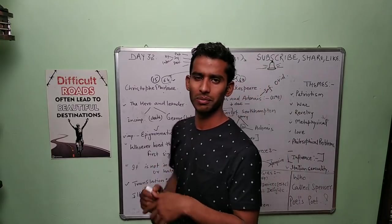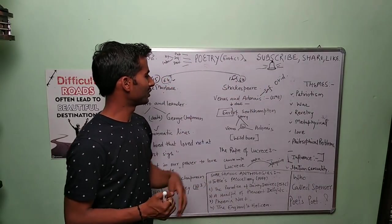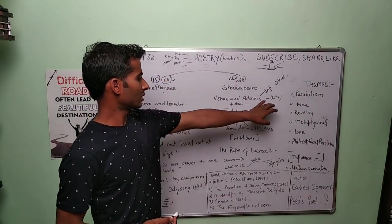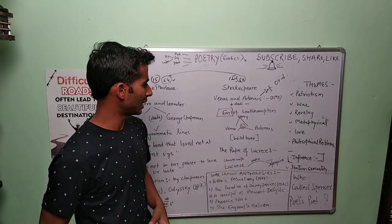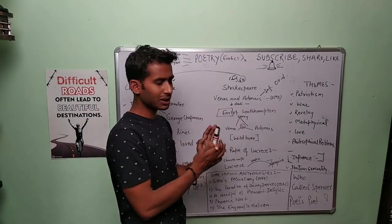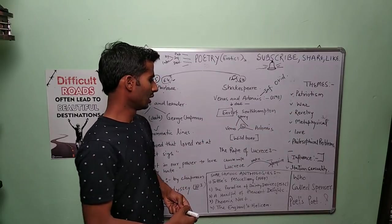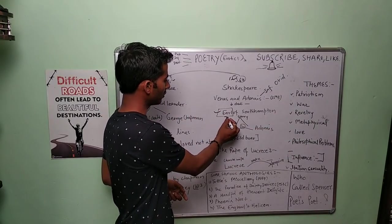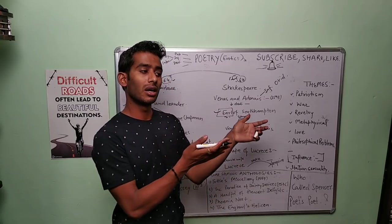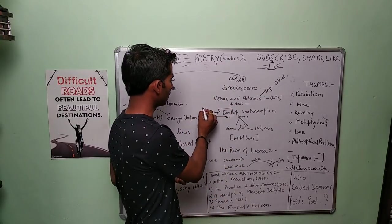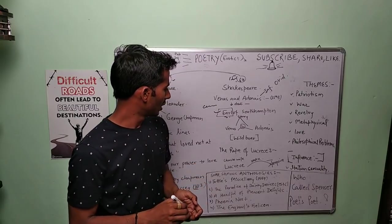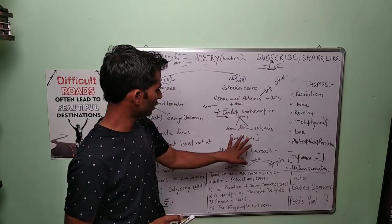So here, Shakespeare, Venus and Adonis—it got published in 1593 and it was dedicated to Earl of Southampton. And I will give you a homework: find out the meaning of 'earl' and what was 'earl' at that time, and write down in the comment box.